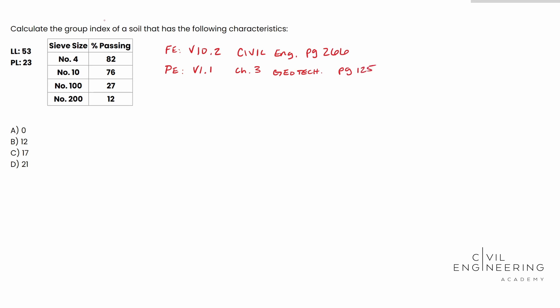All right. And whenever you go on that page, you're going to find that the GI, the group index, is equal to F200 minus 35, this is in parentheses here, and that's going to be multiplied by 0.2 plus 0.005 times the liquid limit minus 40. And then we add 0.01 times F200 minus 15 times the PI minus 10.